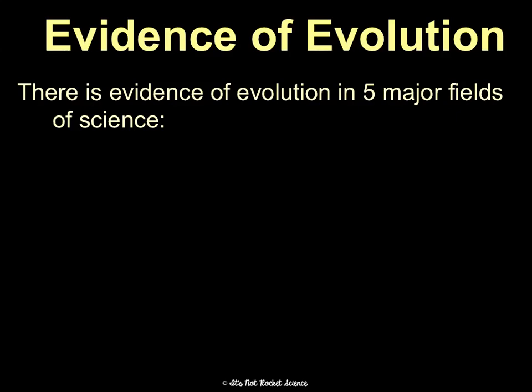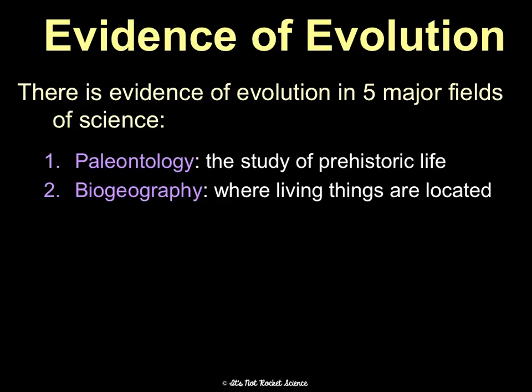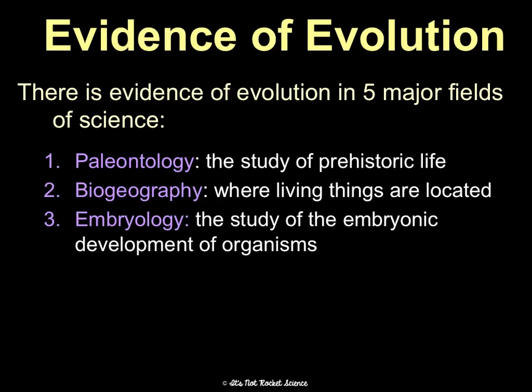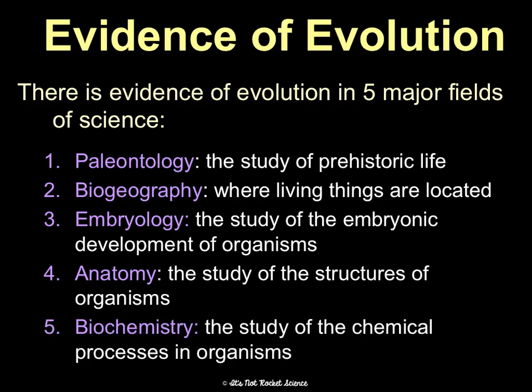there are basically five major fields of science that provide evidence for evolution. First is paleontology, which is the study of prehistoric life. Next is biogeography, and that's the study of where living things are located. Embryology is the study of the embryonic development of organisms. Anatomy is the study of structures of organisms. And biochemistry is the study of chemical processes in organisms.